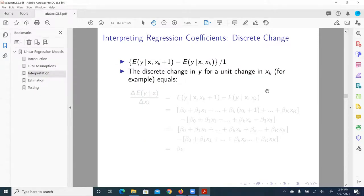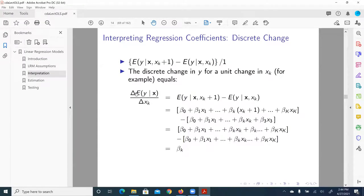Calculate this quantity. So in the denominator, delta x_k, because we just changed the generic variable x_k by one unit. So that term disappears. You know, any quantity divided by one is going to be whatever quantity in the numerator.